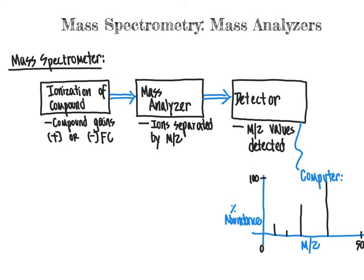In this video we continue our journey learning about the mass spectrometer. We focused in the last video on soft and hard ionization techniques where the compound gains a positive or negative formal charge, in other words becoming an ion. In this video what we are going to focus on is the separation of those ions based on their m/z, their mass to charge ratio.